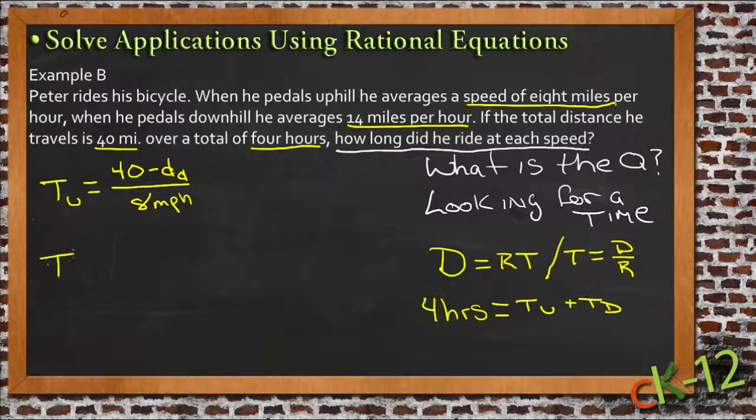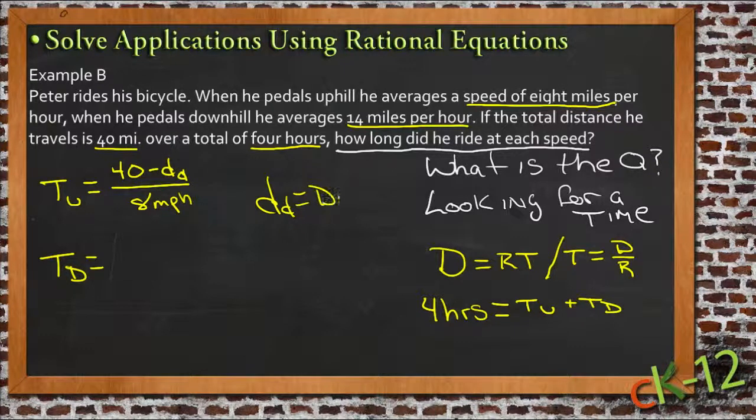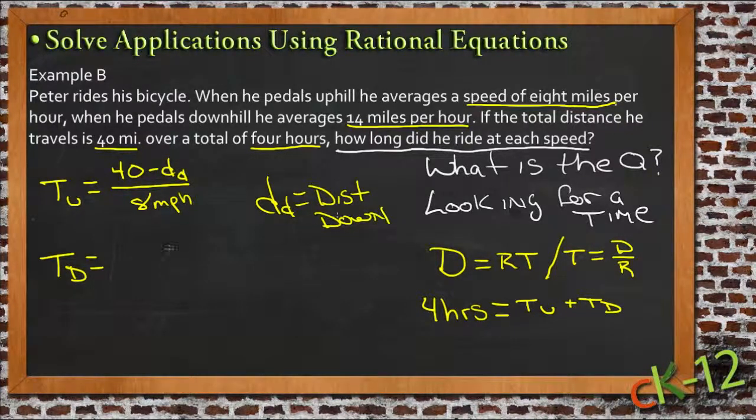Now we'll do the same thing with time downhill. D sub D is the distance downhill, so time downhill is D sub D over the rate downhill, or 14 miles per hour.